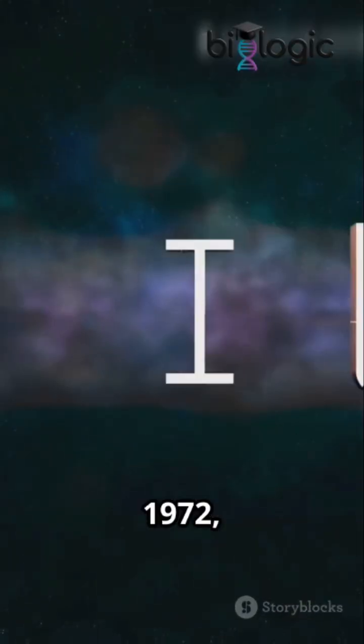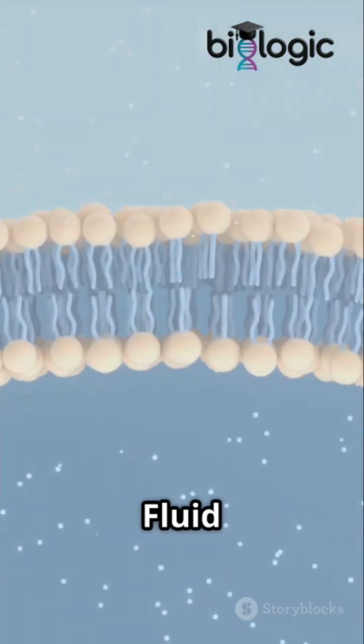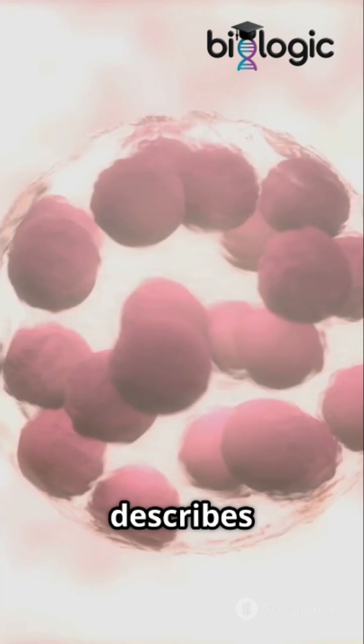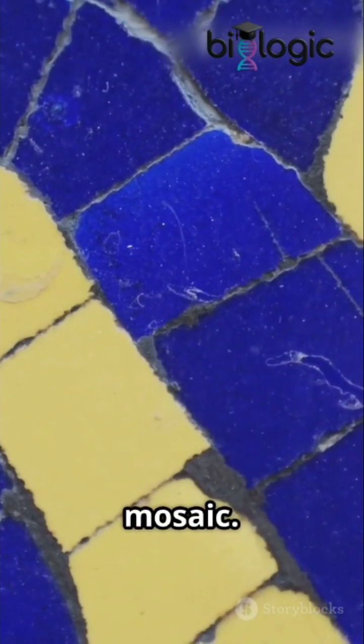In 1972, S.J. Singer and Garth Nicholson introduced the fluid mosaic model, which is still accepted today. It describes the membrane as a fluid-lipid bilayer with proteins embedded like tiles in a mosaic.